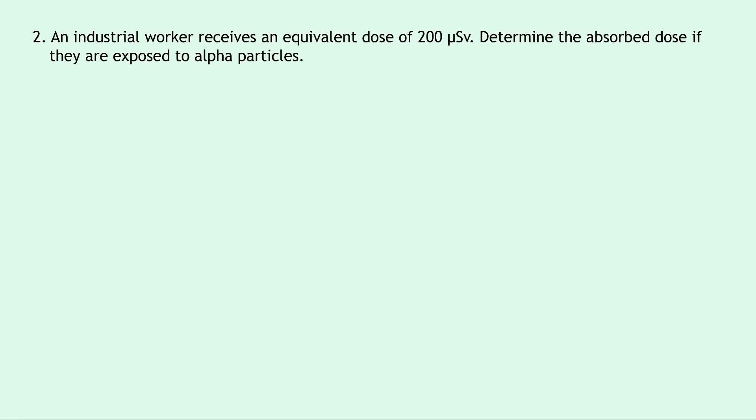Question two says that an industrial worker receives an equivalent dose of 200 micro Sieverts. Determine the absorbed dose if they are exposed to alpha particles.